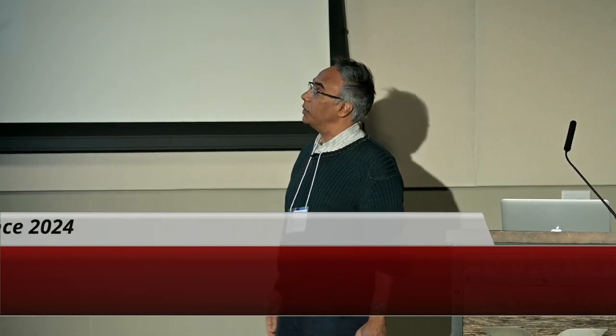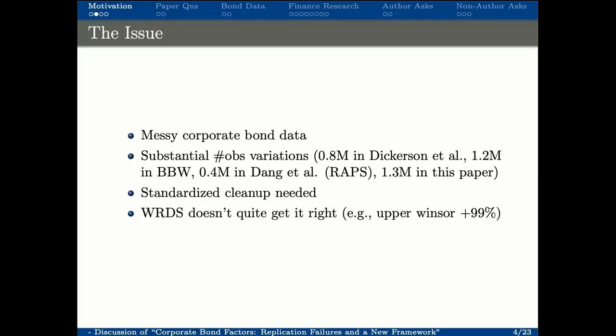The issue is that it's very messy data, and if you look at the literature, it's actually shocking how much the number of observations varies. It's pretty much the same sample period, about 2002 to 2016 or 2017. It's 0.8 million to 0.4 million in a paper in the RIPS by Dang et al., and 1.3 million in this paper. You need a standardized cleanup because they're all over the place.